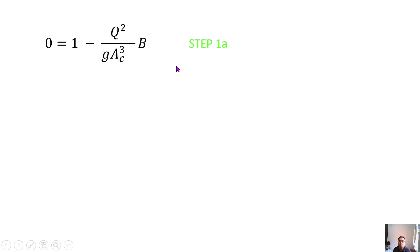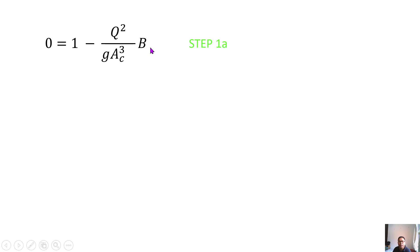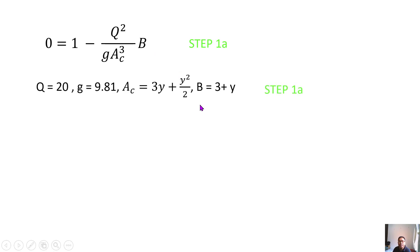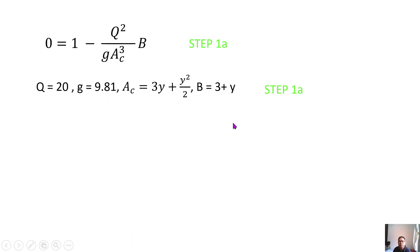To summarize step one: identify the correct equation from the question, which relates the quantity of flow with gravity, cross-sectional area, and the width of the channel. Step 1b is to identify the given parameters — Ac is given by its expression, the width B is given by its expression, Q is 20 cubic meters per second, and gravity g is 9.81 meters per second squared.